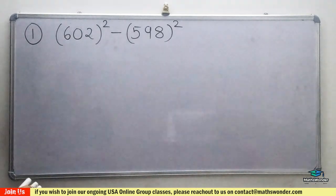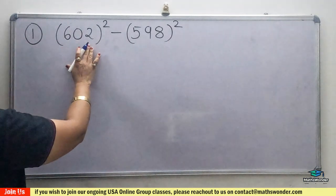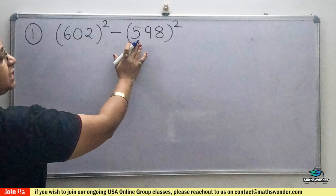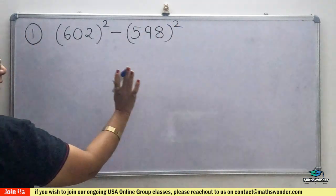So this question is, today's question: 602 whole square minus 598 whole square.